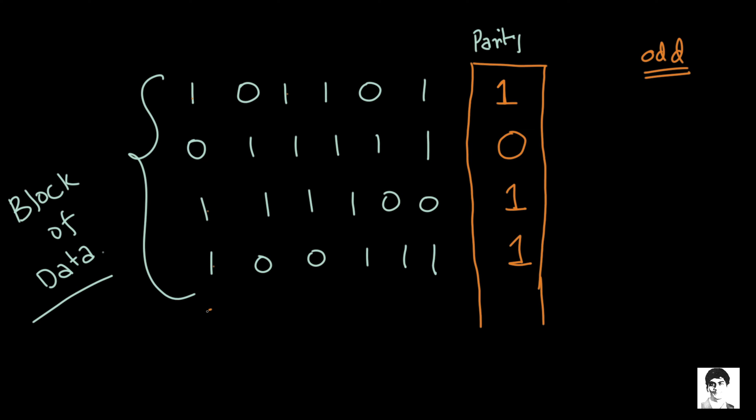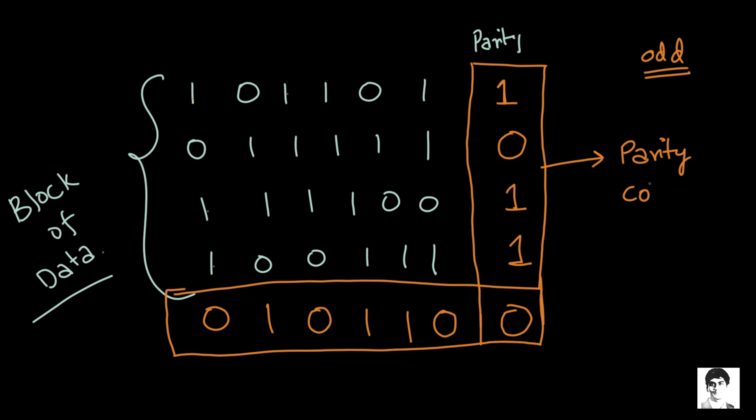Now we are going to repeat the same thing for columns. So since I'm using odd parity I will just make sure that the number of ones in each column is odd. So if I get three already I'll put it to zero. So this is how we build a parity block. The column of parity bits is referred to as parity column and the row of parity bits is referred to as parity row.